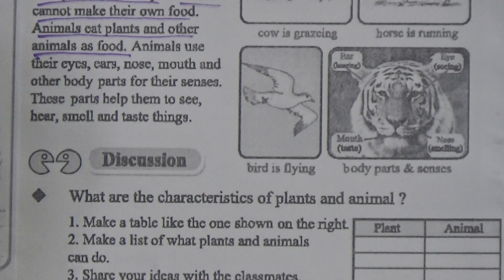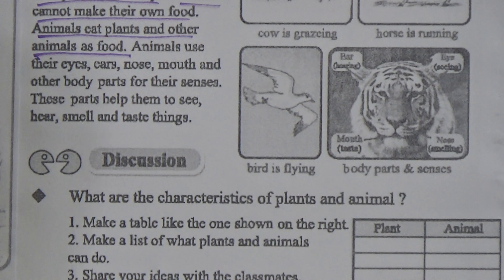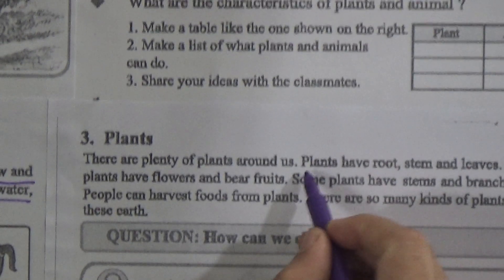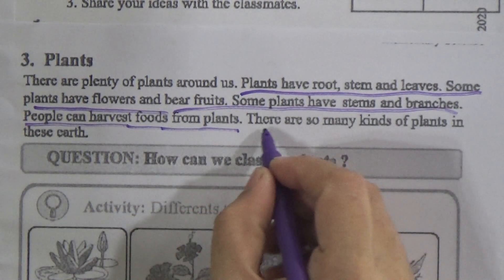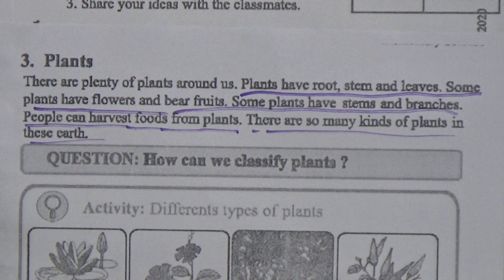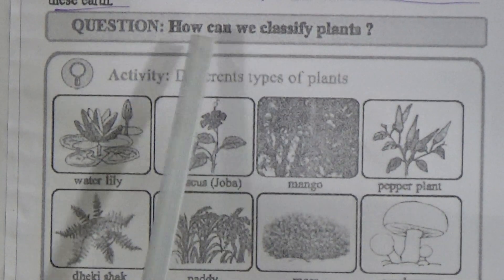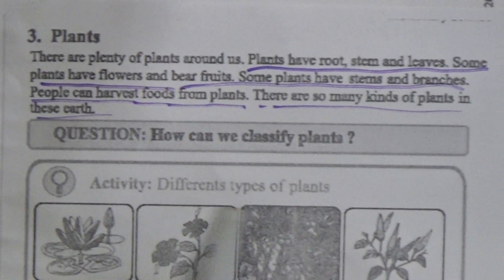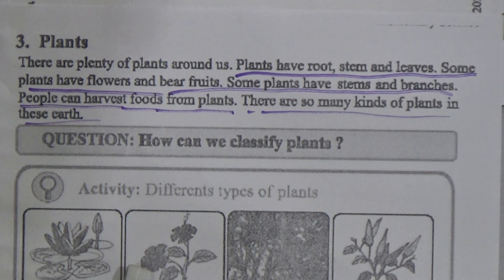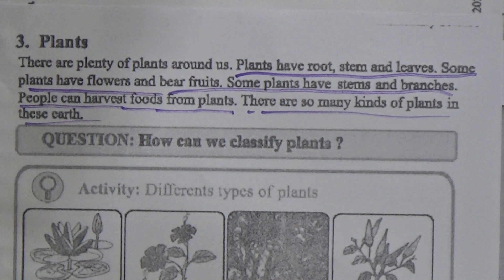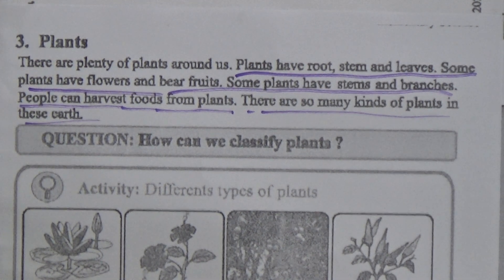There are plenty of plants around us. Plants have roots, stems and leaves. Some plants have flowers and bear fruits, and some plants have stems and branches. People can harvest food from plants. There are so many kinds of plants on Earth. See this activity figure showing different types of plants: water lily, hibiscus, mango, pepper plant, dheki shak, pedi, moss and mushroom.